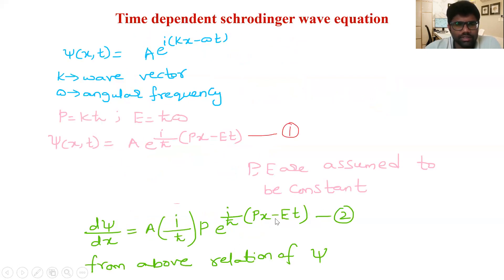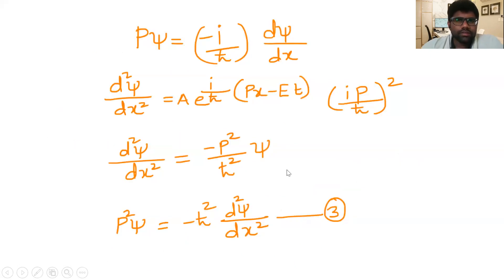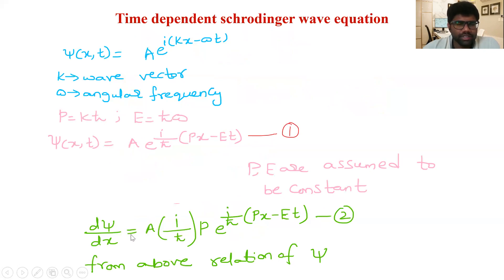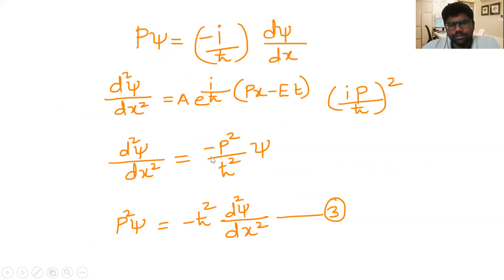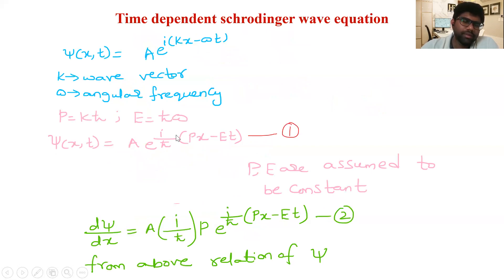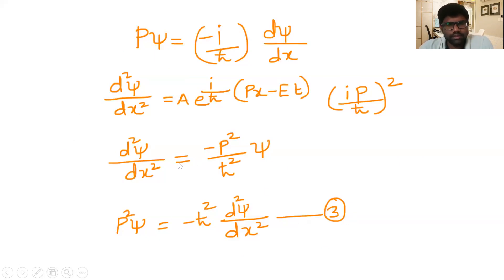Now if we double differentiate equation 1 with respect to x, we get (∂²ψ/∂x²) = A·e^(i/ħ)(px − Et) · (ip/ħ)². Since i² = −1, we get −p²/ħ², and this term is again ψ. Rearranging, taking ħ² and the minus sign to the other side: p²·ψ = −ħ²·(∂²ψ/∂x²). This is the third equation.